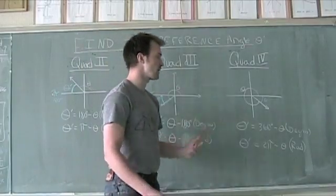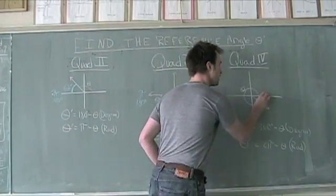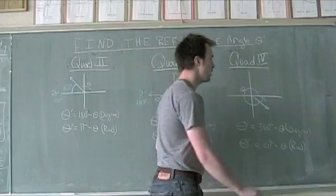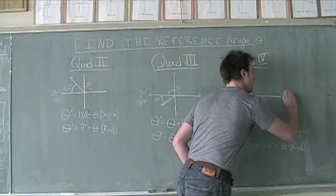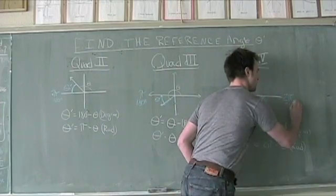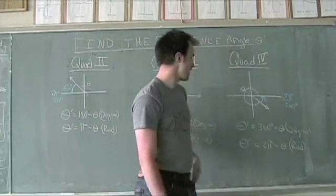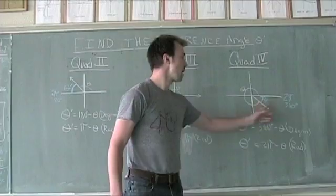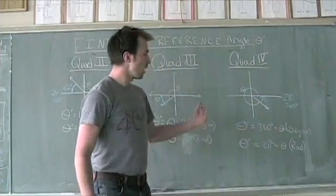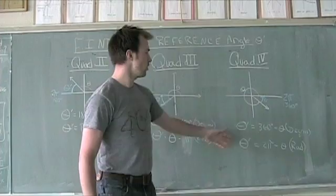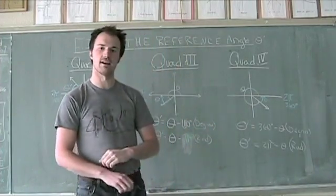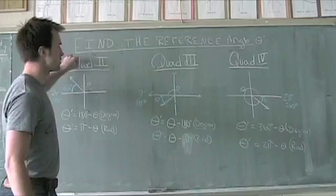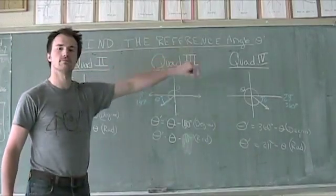As for quadrant number 4, now we mix it up again, and our acute angle, as you can see here in blue, this theta prime is coming back around to 2 pi or 360 degrees. So our formulas to find theta prime are 360 degrees minus theta if we're in degree form, or 2 pi minus theta if we're in radians. Those are the rules for quadrants 2, 3, and 4.